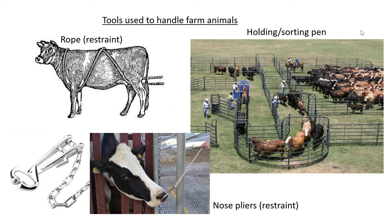On the right-hand side, we have a holding or sorting pen. These pens are made out of individual gates or sections that can be separated from one another and rearranged — it's not a permanent structure. You can use these railings to make a temporary camp somewhere else. It's a physical way of handling animals, sorting them out, and directing them to where you want them to go.